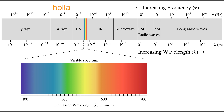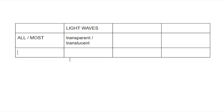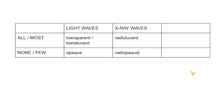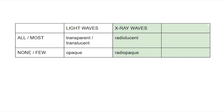X-ray waves are similar to light waves, but they can go through more stuff — for example, your clothes. When something allows most light waves to go through, we say it is transparent or translucent, and when something allows few light waves to go through, we say it is opaque. Similarly, when something allows most x-ray waves to go through, we say it is radiolucent, and when something allows few x-ray waves to go through, we say it is radiopaque. Now, there's a lot of wiggle room between completely radiolucent and completely radiopaque, so if we want to be more precise, we can talk about radiodensity. Lower radiodensity means more radiolucent, and higher radiodensity means more radiopaque.